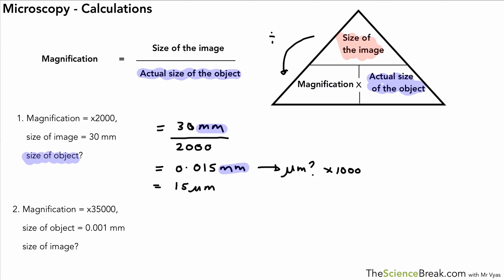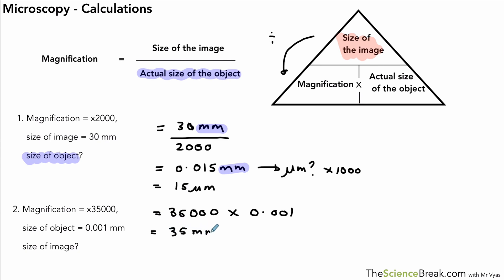In the second example we want to work out the size of the image. Using our formula triangle, it's magnification times the actual size of the object — both are given in the question. So we do 35,000 times the actual size, which is 0.001 millimeters. Working that out gives an answer of 35 millimeters. We won't convert that because we're looking at the size of an image and we can detect that by looking at it, so we leave it as 35 millimeters unless the question asks us to convert.